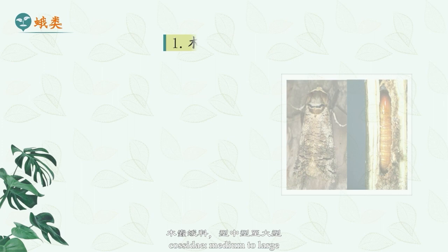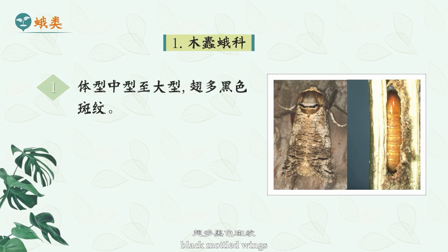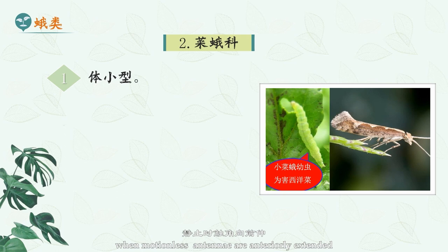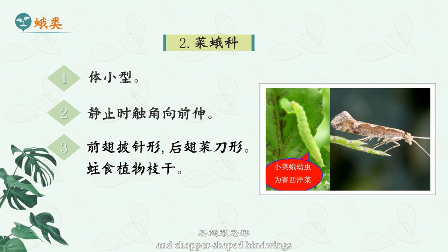Cossidae: medium to large, with a large abdomen, black mottled wings, reduced beaks, stout larvae, mostly yellow or red, feeding on plant branches. Platidae: the body is small. When motionless, antennae are anteriorly extended, with lance-shaped forewings and chopper-shaped hind wings. The larvae have elongated green bodies.